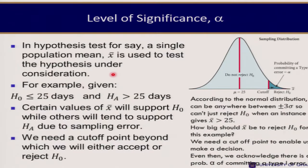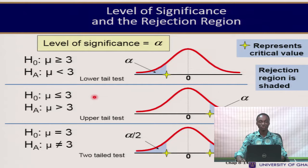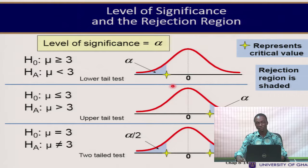In a hypothesis test, we normally use a single population mean — in this case X̄ — to test the hypothesis. For example, if the null hypothesis is μ ≤ 25 days and the alternate hypothesis is μ > 25 days, certain values of X̄ will support the null hypothesis while others support the alternate. Based on the normal distribution, we select a level of significance α, which gives us a critical value that tells us at what point we reject or fail to reject the null hypothesis.